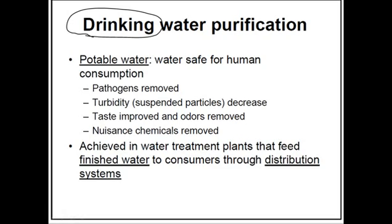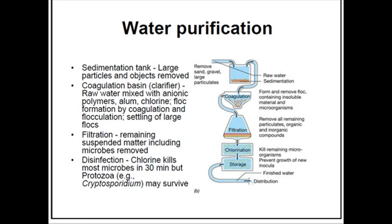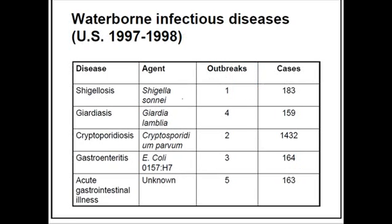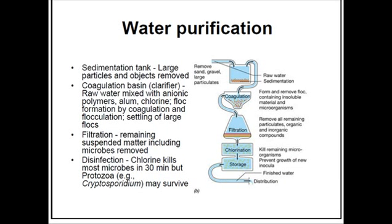After all these things, we can produce drinking water. What is achieved in the water treatment plant is that finished water is fed to consumers through the distribution system. In the distribution system we go through several steps like chlorination to finally yield good water for health consumption. If we have any leakage in the water treatment process, diseases like shigellosis, giardiasis, gastroenteritis, cholera, and typhoid can occur.